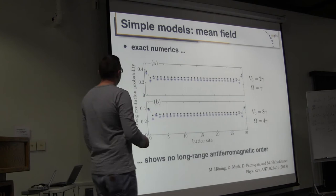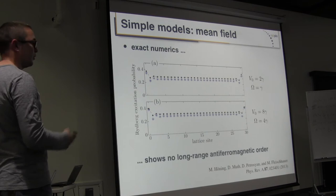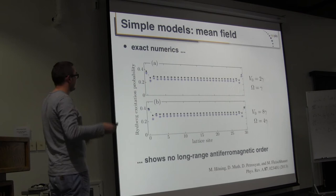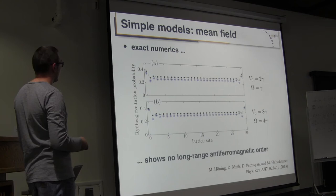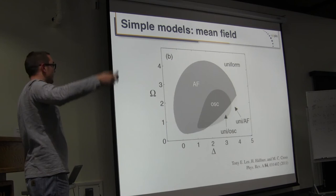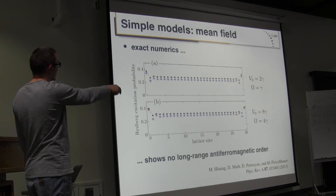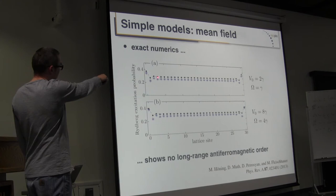However, more recent work - I believe from the Amthor-Lesanovsky group - using exact numerics with the stochastic wavefunction technique just described, looked at a one-dimensional chain of 31 two-level atoms in this parameter regime. What you see is that there is some oscillating density at short distances, but there is really no sign of any long-range correlations in the system.